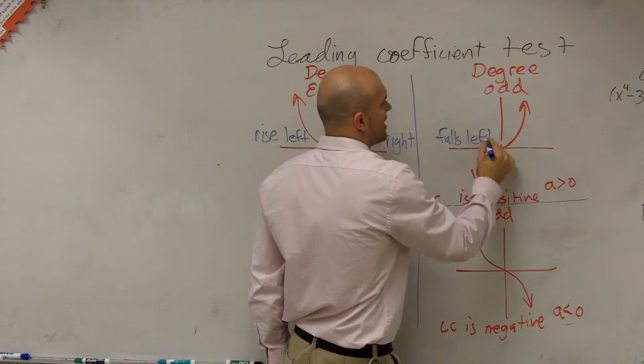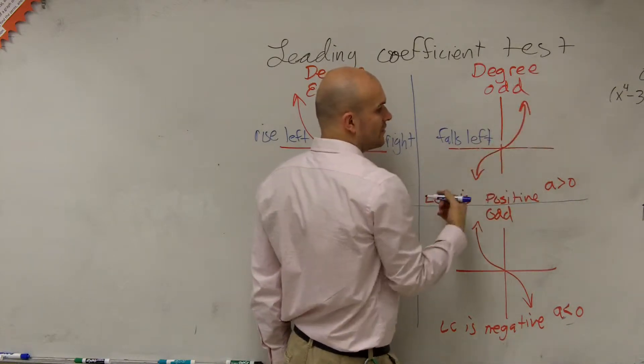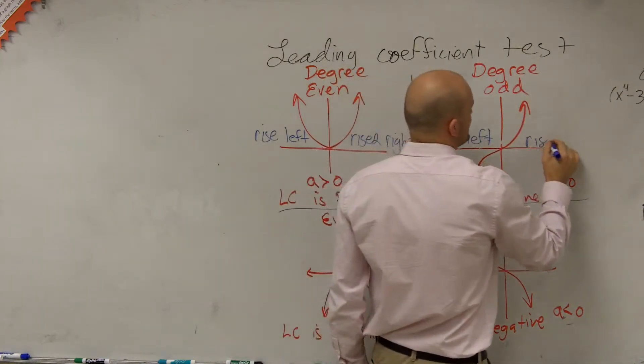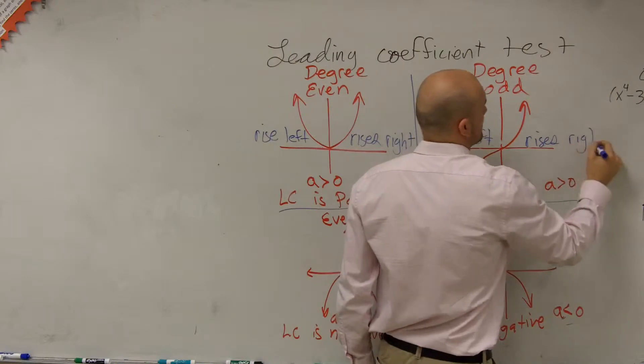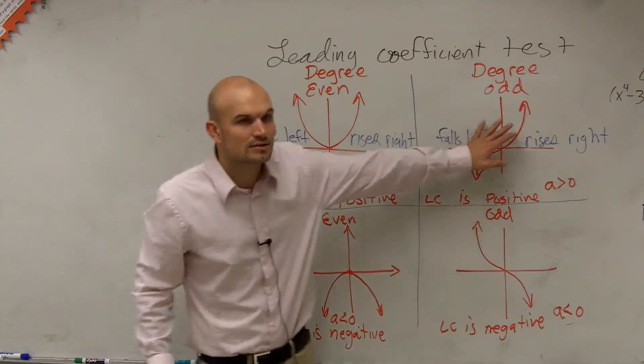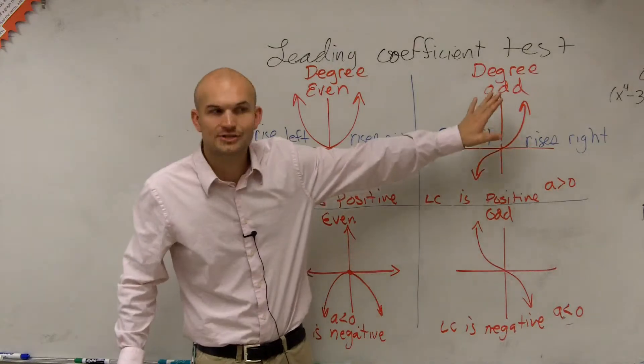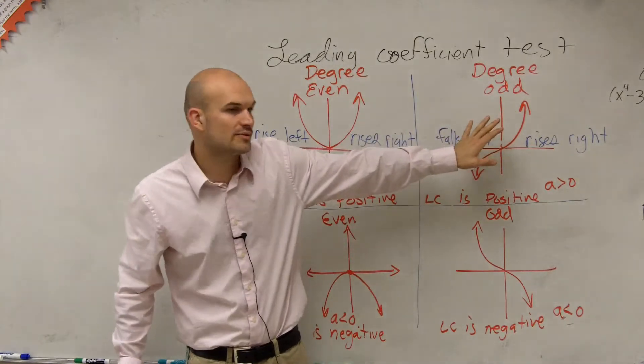That's an E at the end of the line. And then as we go to the right, is it rising or falling? So you could say it rises right. And guess what? For all polynomials with an odd degree, it doesn't matter if that degree is 3, 7,